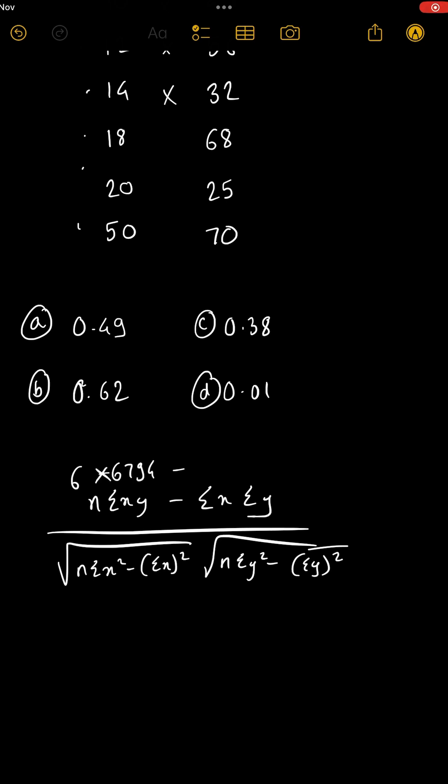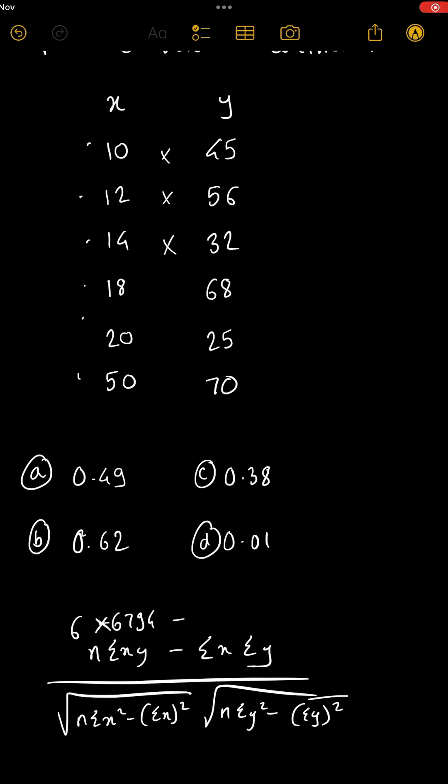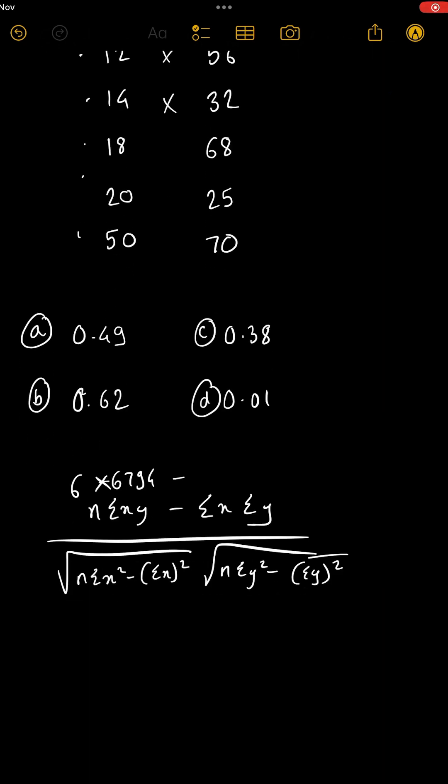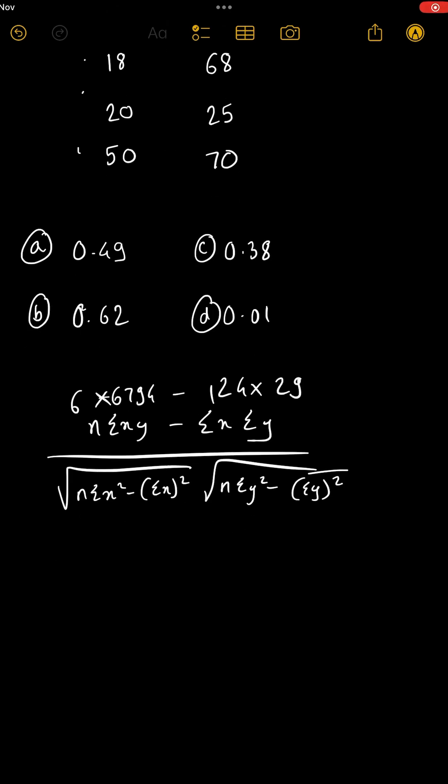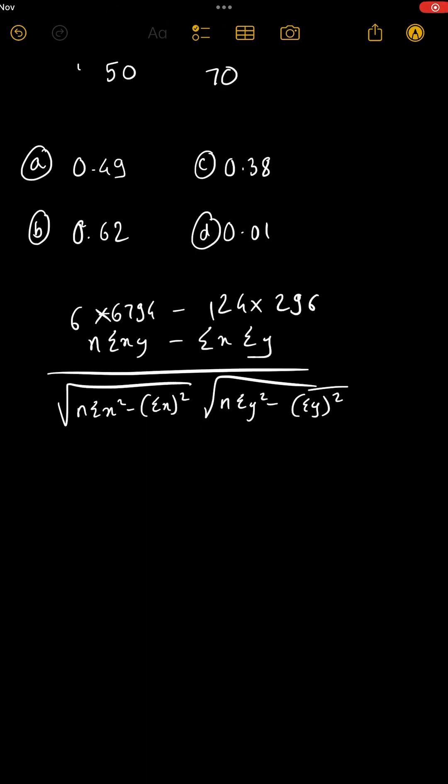Minus summation x into summation y. What is summation x? 10 plus 12 plus 14 plus 18 plus 20 plus 50, that is 124 into summation y, that is 45, 56, 32, 68, 25, 70, so 296.